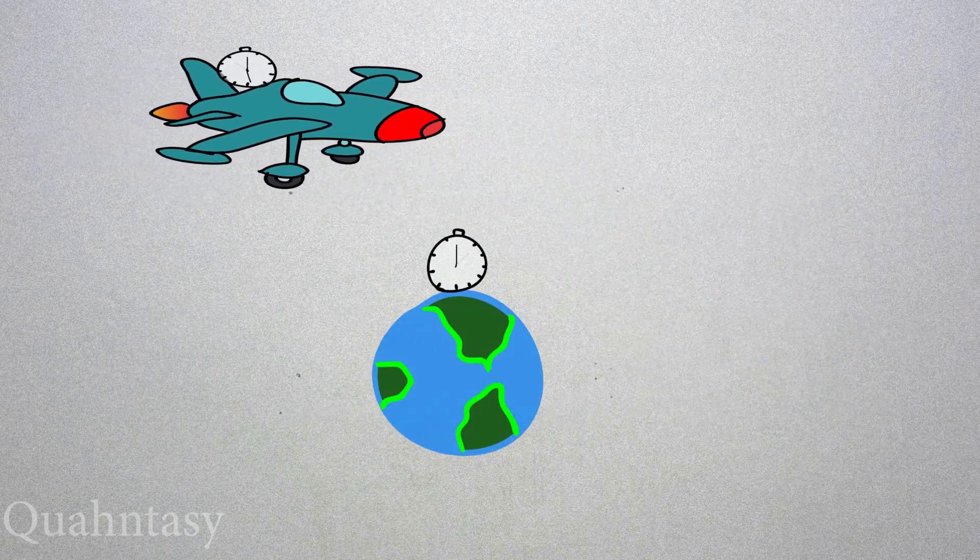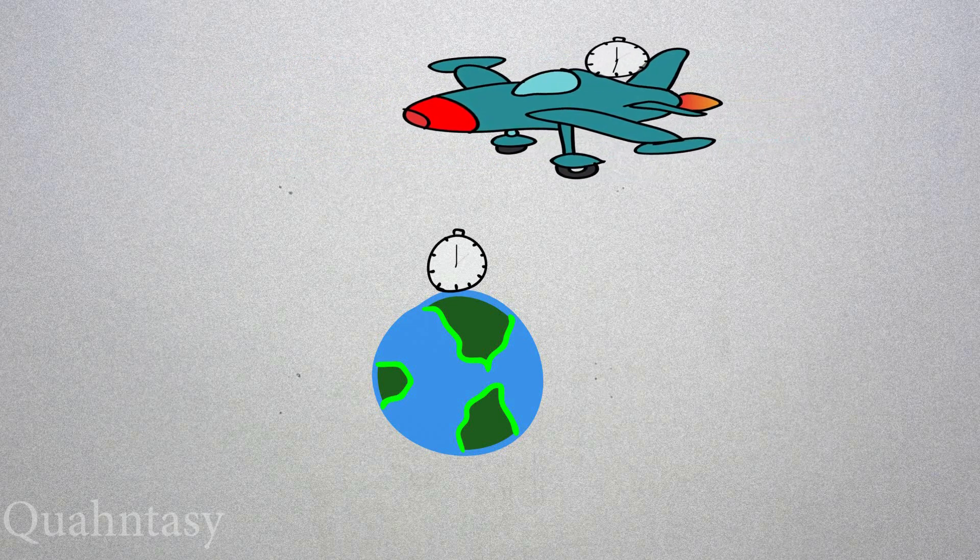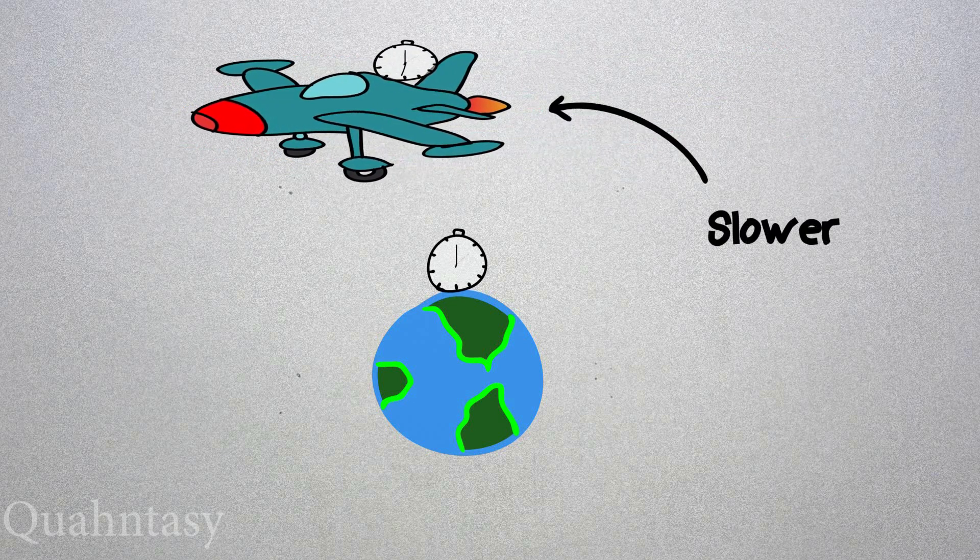Two atomic clocks, one flown in a jet aircraft and the other stationary on Earth. You will find that the flying clock ticks slower because of its speed.